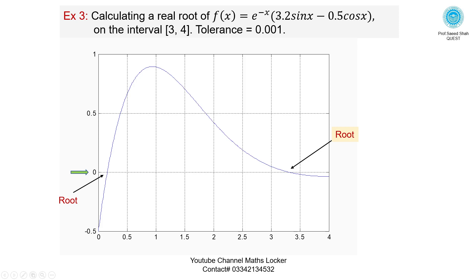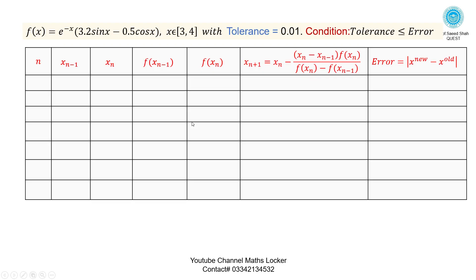Calculate the real root of the function e^x + 3.2 sin(x) - 0.5 cos(x) on the interval [3], with tolerance 0.001. Draw the graph in MATLAB, mark the 0 on the left hand side x-axis. Here is the root. This condition is true. Do yourself.